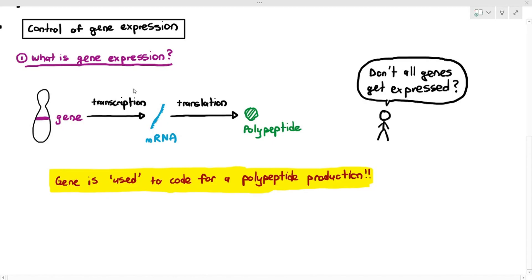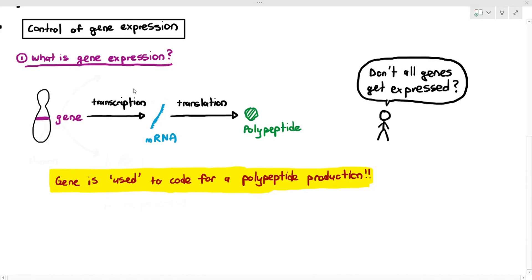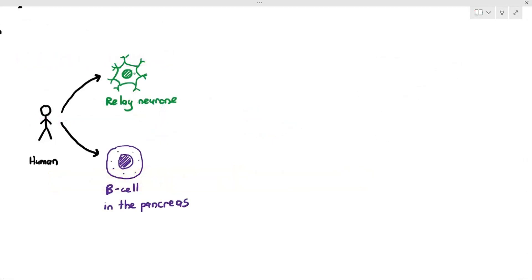As a human, if you are humans watching this channel, so as an example, I just want you to imagine two cells in your body, the beta cell in the pancreas, and also your relay neuron. Now, a favorite question I love to ask my students is as follows. I would ask my students, do these two cells have the same function?